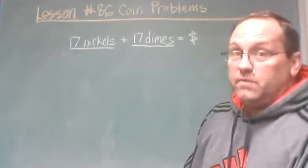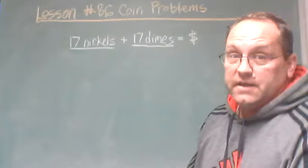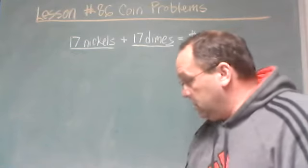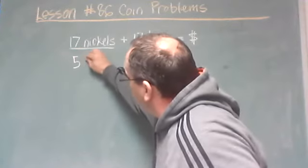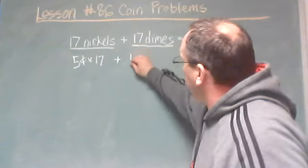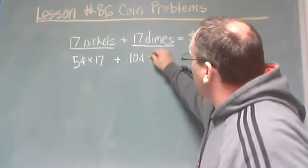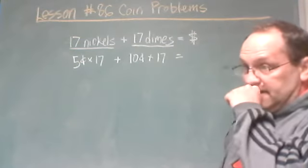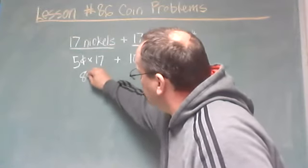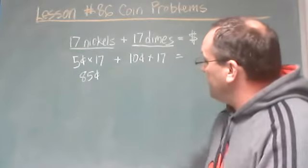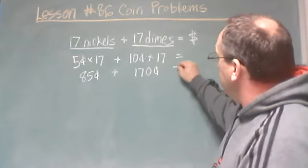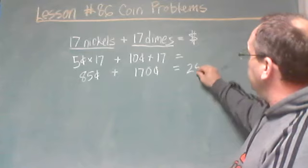How would we determine the value if we want to know what 17 dimes plus 17 nickels adds up to? We know a nickel is worth 5 cents, and we have 17 of them. A dime is worth 10 cents, and we multiply that by 17. When we multiply out, we get 85 cents, plus 170 cents, which gives us a total of 255 cents.